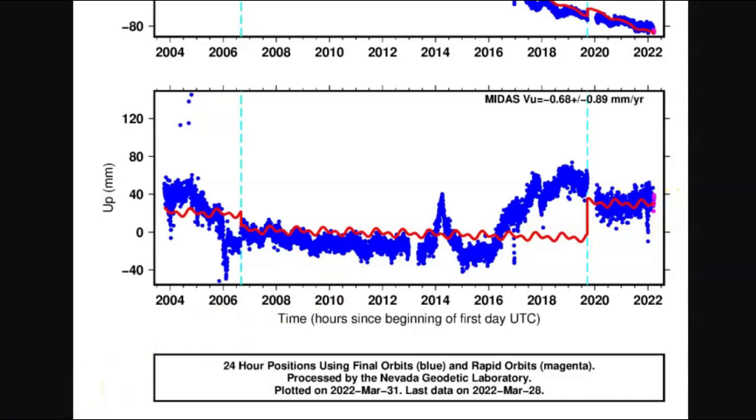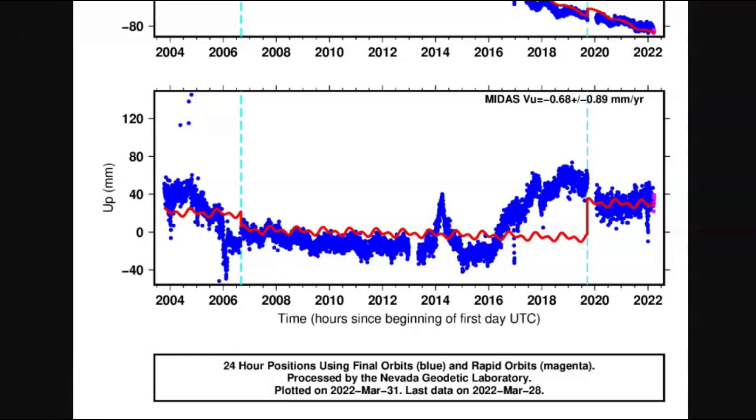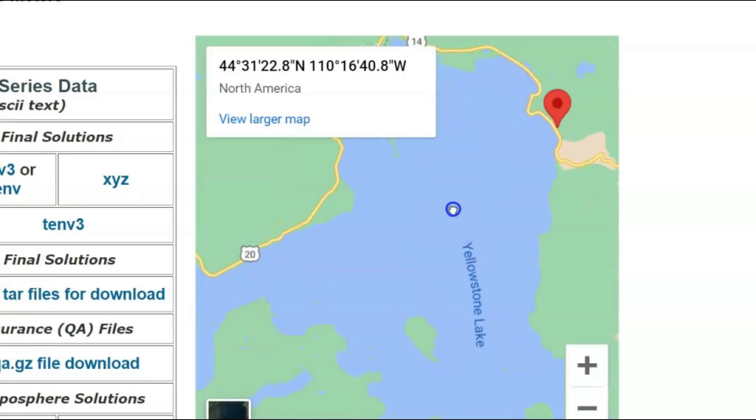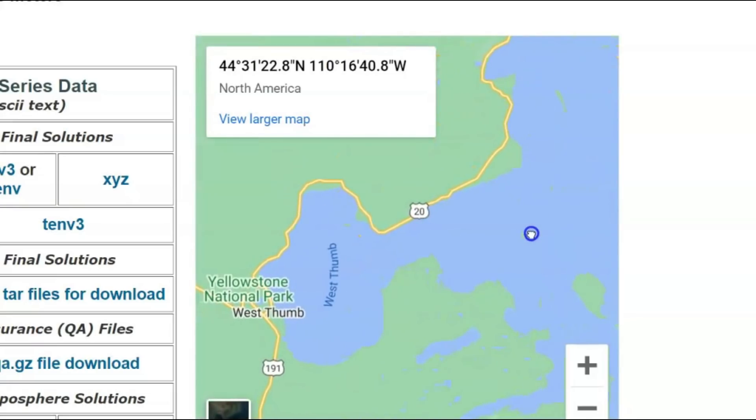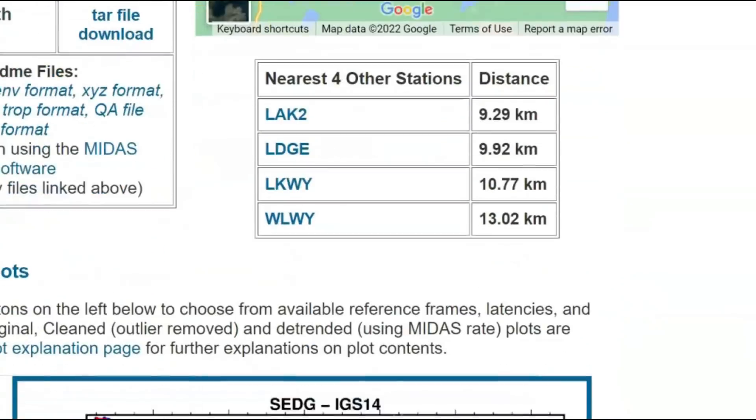And it looks like it's kind of holding steady right now. Might be growing a little bit. Again, this is the monitor on GPS for the Norris Geyser Basin. All right. The next monitor, it looks like it's over by Lake Butte. There's Yellowstone Lake over here. It would be a little west thumb. And let me bring it down.